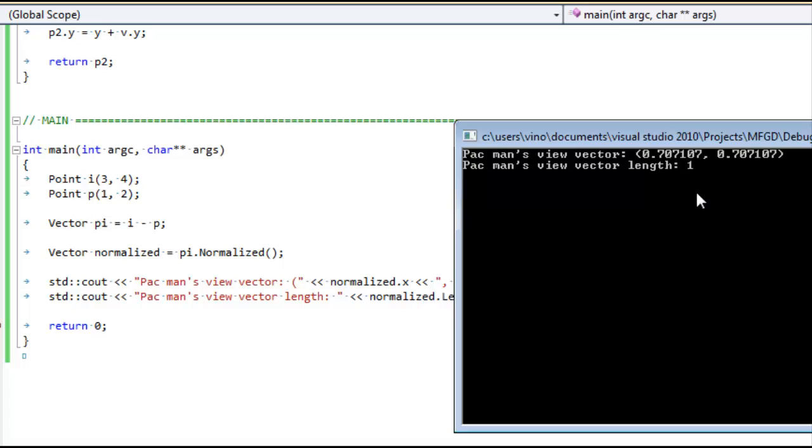And then when we print out the length, we see that a vector with X .707107 and Y .707107, the length of that vector is amazingly 1. So now we have a way of storing where Pac-Man is looking. And because we can do this math however we want, we can make him look wherever we want. And that is pretty cool.